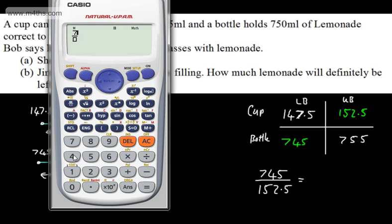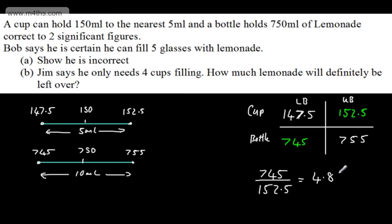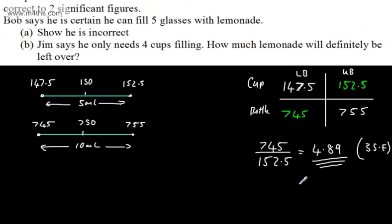So we've got 745 - that's the worst case scenario for the amount of lemonade he has. The worst case scenario is that his cups are the biggest they could possibly be. So we end up with 4.885. We'll say that's going to be 4.89, given to three significant figures. So that now is the number he can fill.